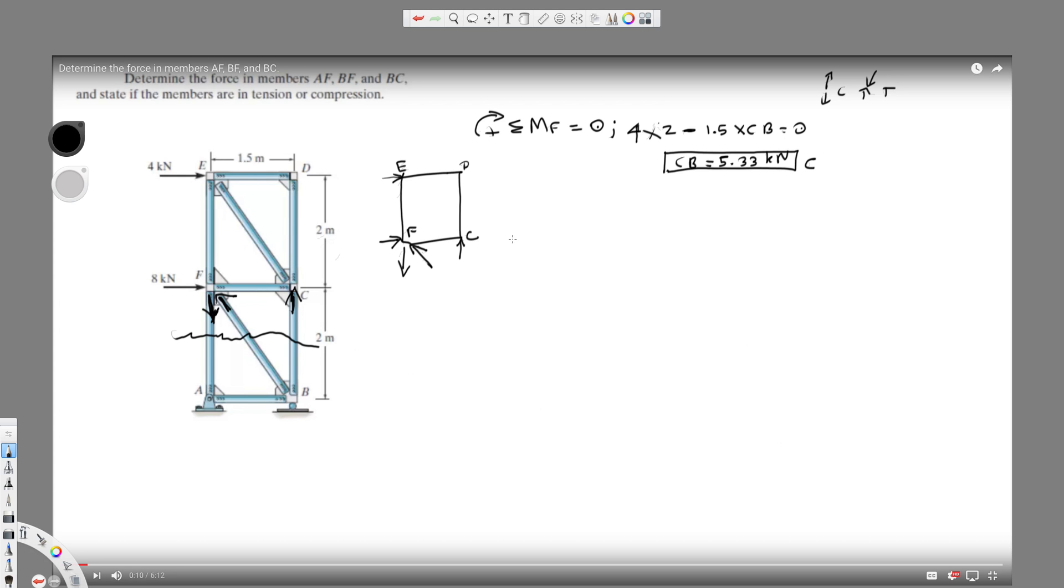And from this information we can find the total F of X. So sigma F of X is equal to zero in statics. Let's take this direction positive. And if I solve for this, I will get 4K acting in this position positive, and we have 8 kilonewtons acting in the positive direction.